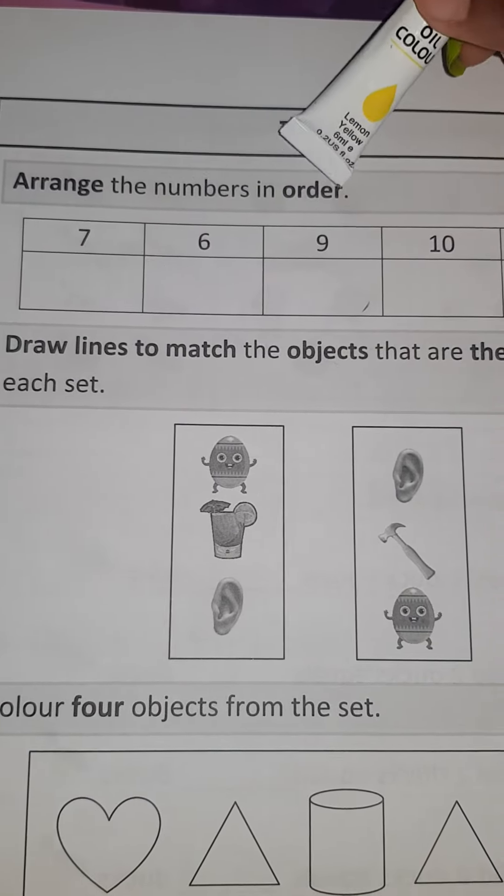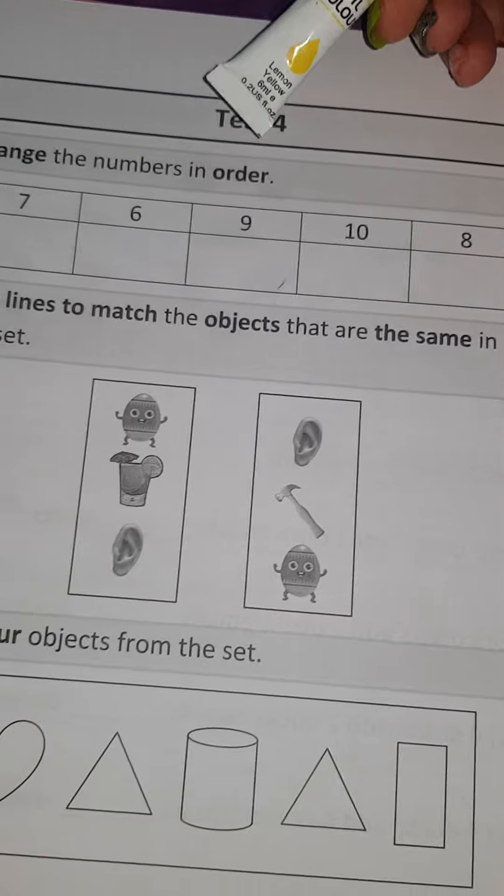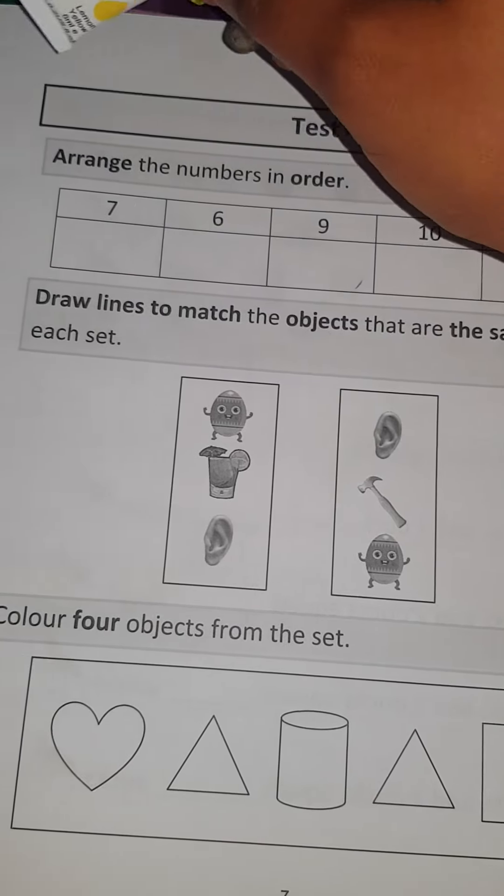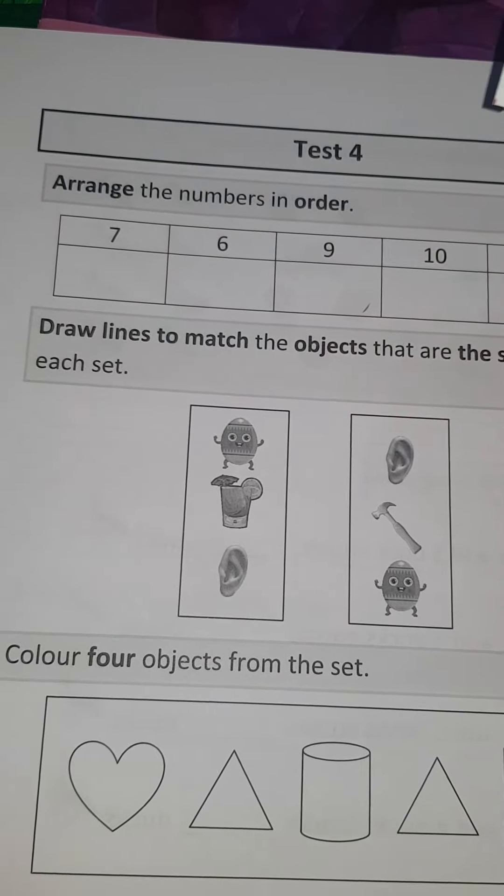So you're going to arrange these numbers in order. How are we going to do this? Well, you can draw a number line from 1 to 10 at the top of your page and see which one comes first, or you can count.